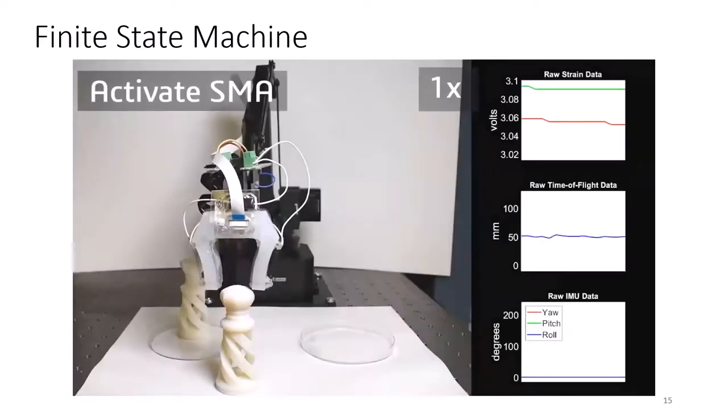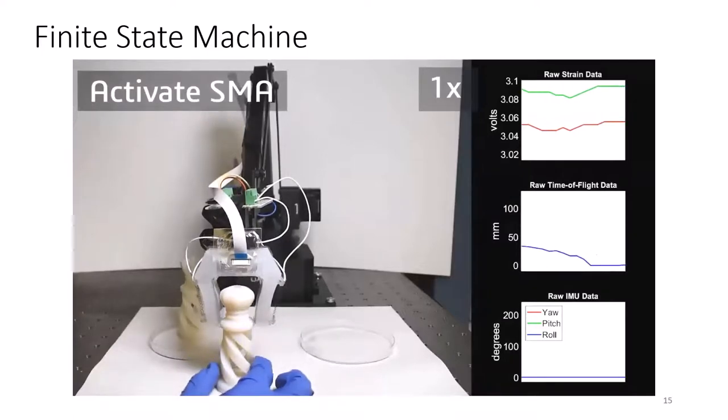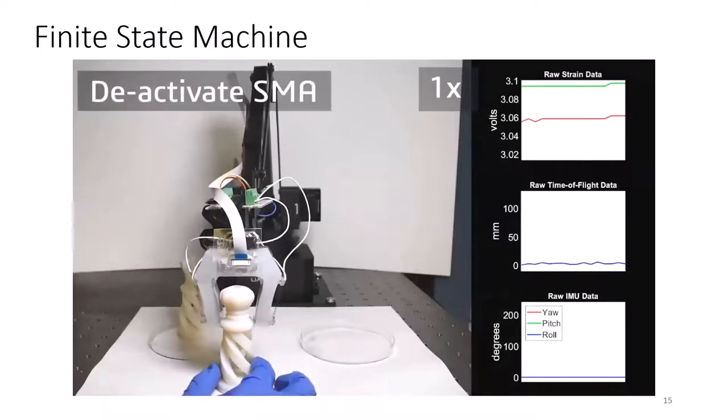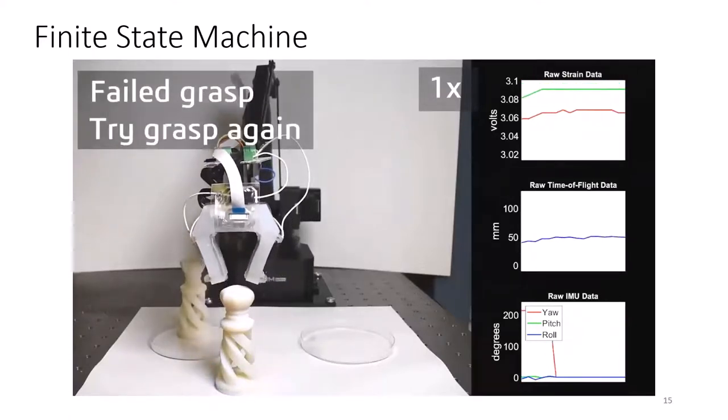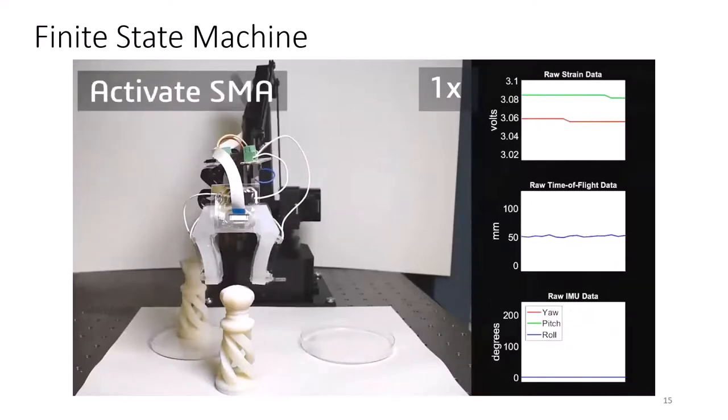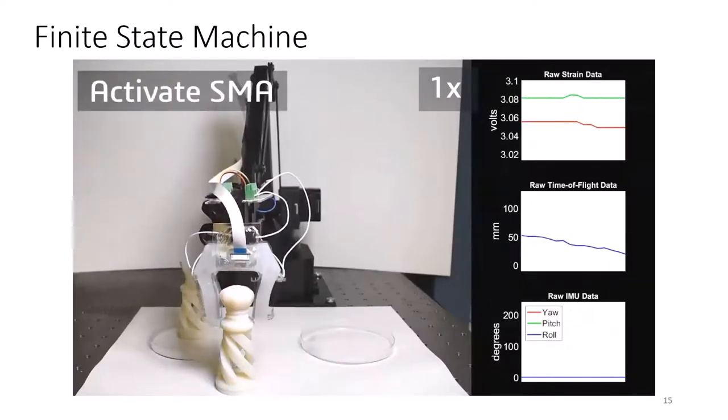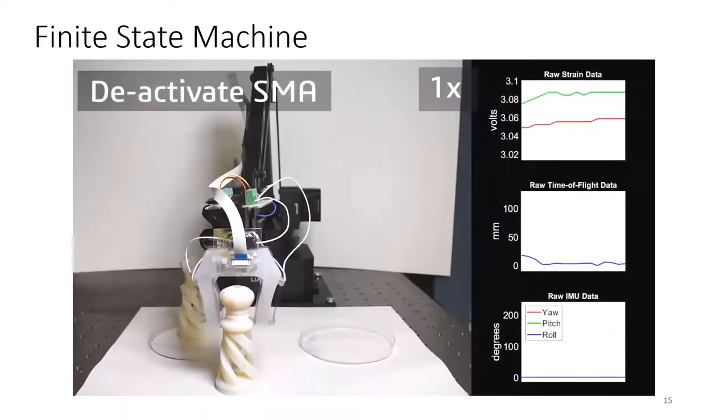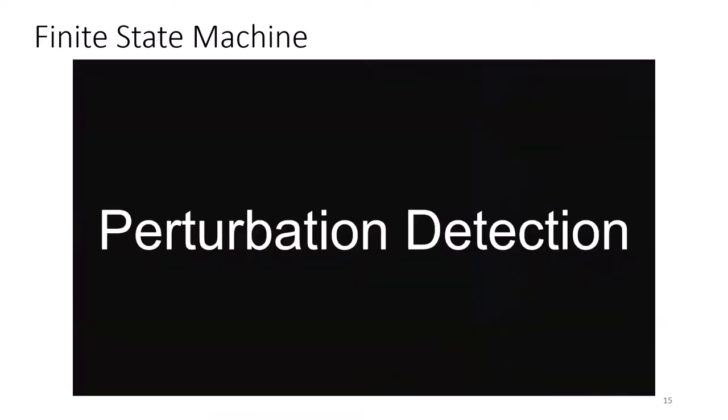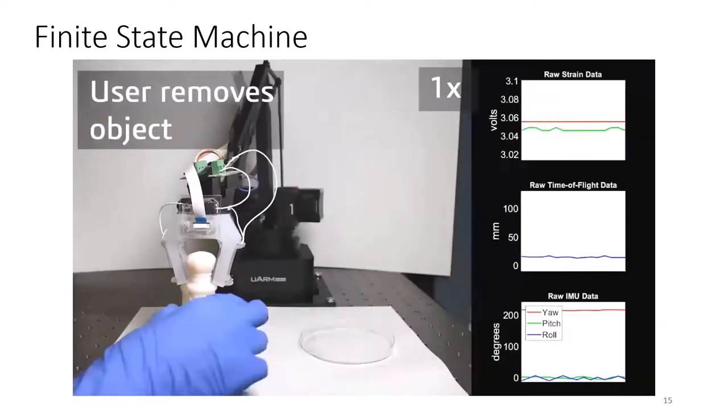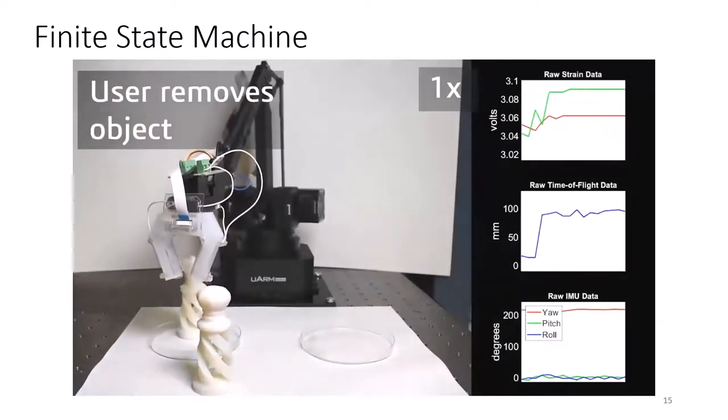The system recognizes that it has not grasped the object and attempts another grasp. For perturbation detection, I remove the object during transport, and the system goes back to the scan state to try to find it.